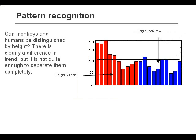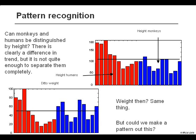Let's take a more realistic example. Here we show the height of different humans and different monkeys, and we would like to be able to distinguish these two groups. And even though we do see a tendency, it's very clear that we cannot have a cutoff level at some height that will perfectly separate the two groups. We could try and add another variable, for example the weight, but we see that the problem is exactly the same.